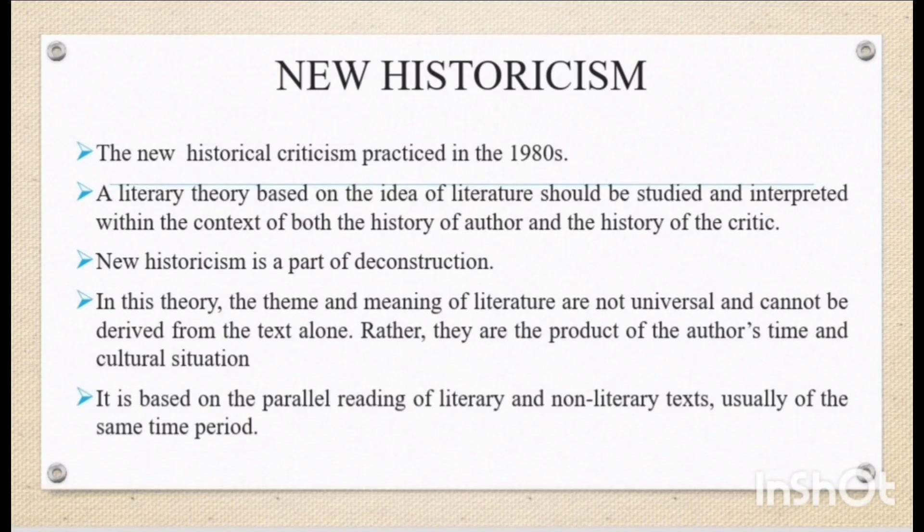New Historicism is a literary theory based on the idea that literature should be studied and interpreted within the context of both the history of the author and the history of the critic as well. In this theory, the theme and meaning of literature are not universal and cannot be derived from the text alone.